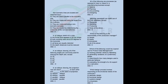In an oblique sketch of a cube: a) the frontal face appears in its true shape, b) both receding axes are at 30 degrees to the horizontal, c) all faces are equally distorted, d) depth distances must be reduced. Answer: A. In an oblique drawing, all of the following angles are commonly used for drawing the depth axis except: a) 30 degrees, b) 45 degrees, c) 60 degrees, d) 90 degrees. Answer: D.